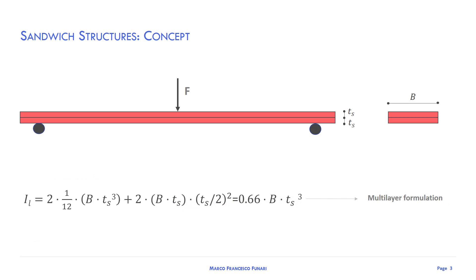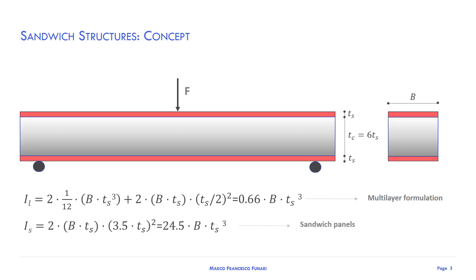Let me explain the sandwich concept shortly. You can imagine this as a multi-layer beam formed by two layers and subjected to 3-point bending test. In this case, the moment of inertia is approximately equal to 0.66 times B times T_S cubed. This is amazing because we can improve the load-bearing capacity while reducing just a low amount of structural weight.